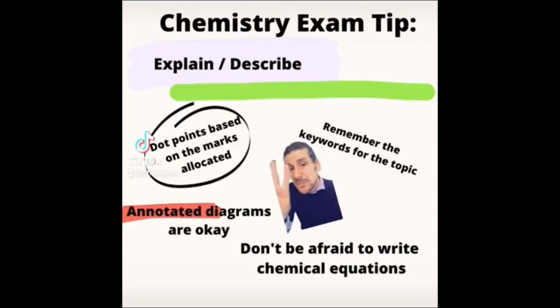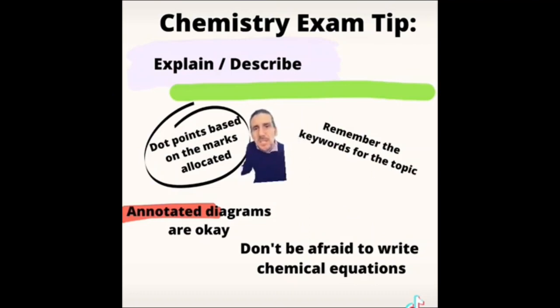Chemistry exam tip number two. What to do when asked to explain or describe things. Firstly, look at how much a question's worth and add that many dot points to your answer box. If a question's worth two marks, put two dot points down and then try and write to those two dot points. Explaining things in chemistry, it's important to use the words you've learned in chemistry. So think about the key words from a topic.